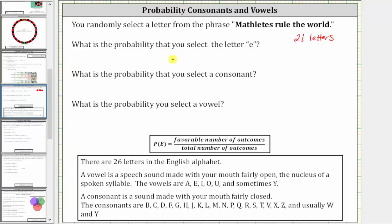To find the probability you select an E, we need to count the number of E's in the phrase. There are one, two, three, four E's in the phrase. These are the four favorable outcomes, and therefore the probability of selecting an E is equal to 4 divided by 21, again because 21 is the total number of outcomes.